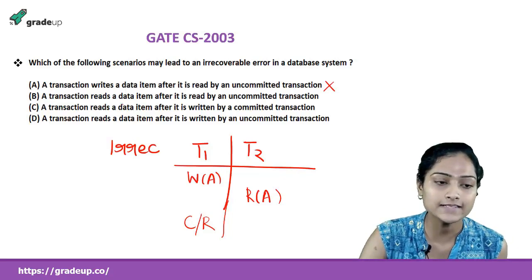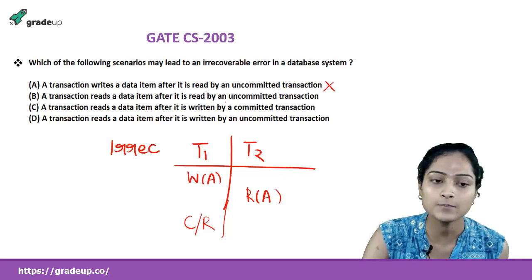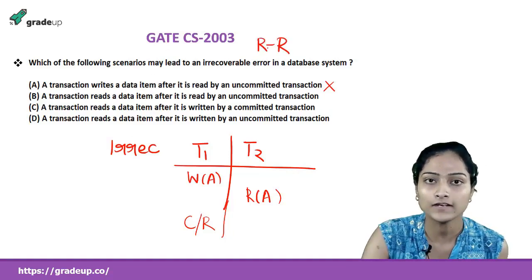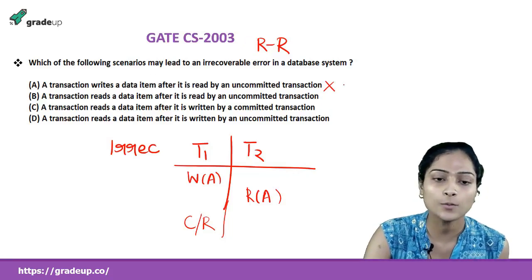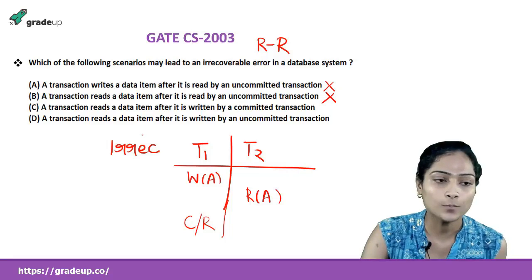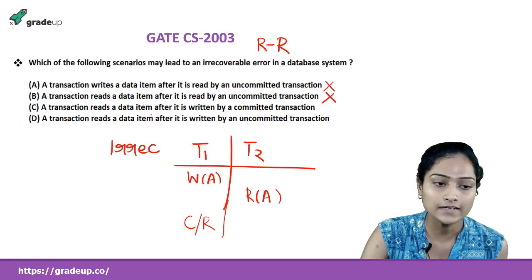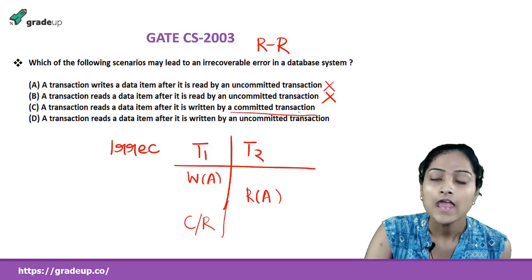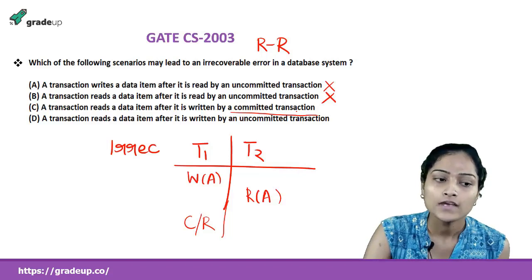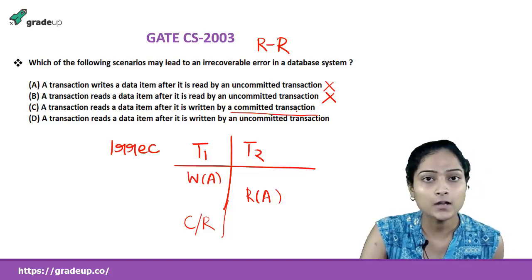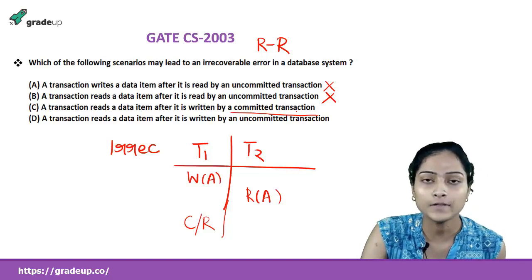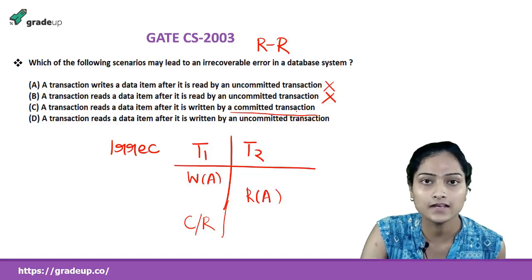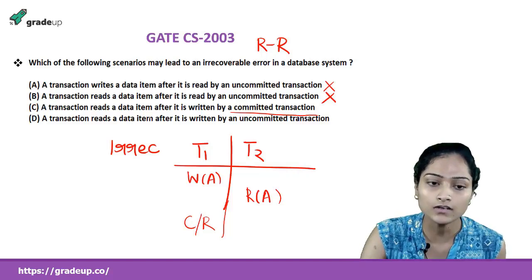Option B says a transaction reads a data item after it is read by an uncommitted transaction — that is a read-read conflict, which is not a conflict pair at all. So option B is also not correct. Option C says a transaction reads a data item A after it is written by a committed transaction. If a transaction reads data updated by a committed transaction, there is no uncommitted read problem, so it cannot be irrecoverable — it is recoverable. So option C is also not correct.